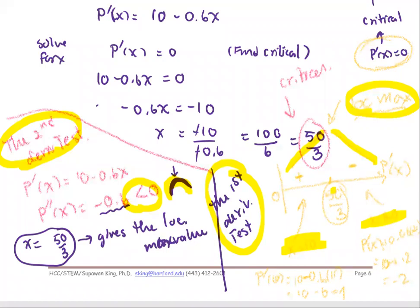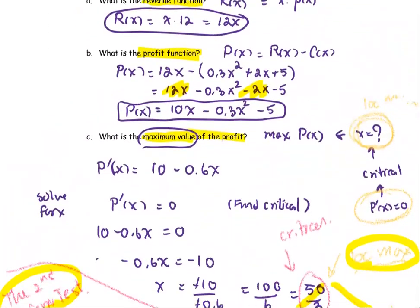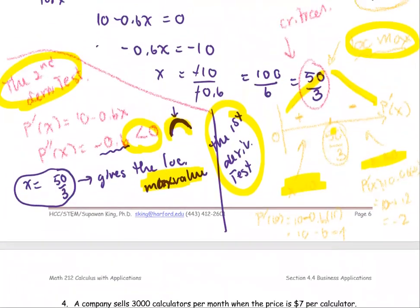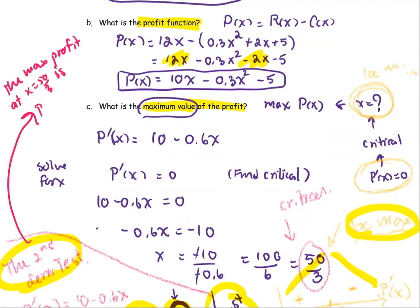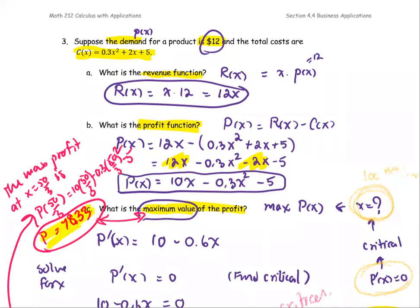Now we find the actual maximum profit value. We know the maximum occurs at x = 50/3, so we substitute back into the profit function: P(50/3) = 10(50/3) − 0.3(50/3)² − 5. Computing this, the maximum profit value is approximately 78.33.